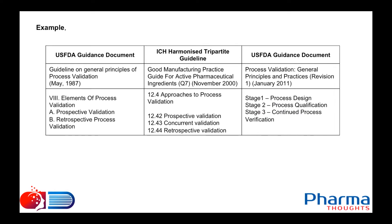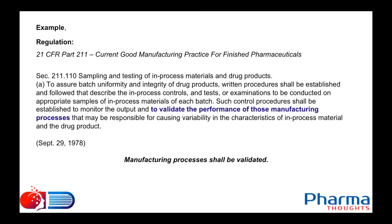However, three different guidances are available — one of which is now obsolete. US FDA published a guidance on general principles of process validation in May 1987. Specific to APIs, we have ICH Q7 published in November 2000. US FDA also revised its initial process validation guidance in January 2011, published as 'Process Validation: General Principles and Practices, Revision 1.' The regulation 21 CFR Part 211 simply states that manufacturing processes shall be validated, but does not specify how they need to be validated.